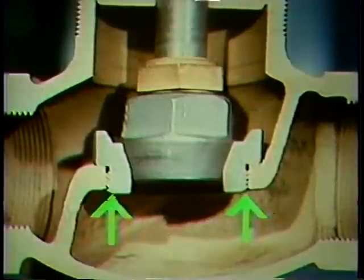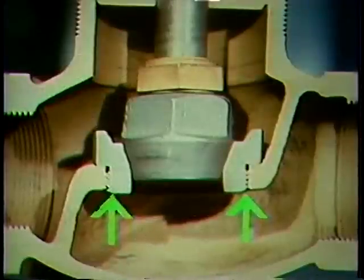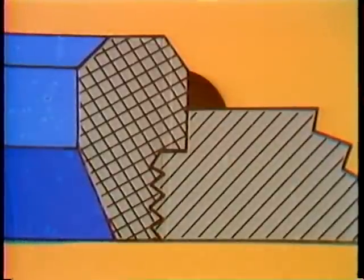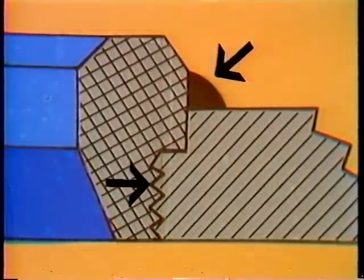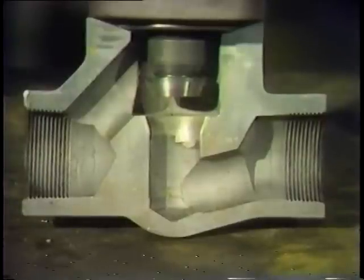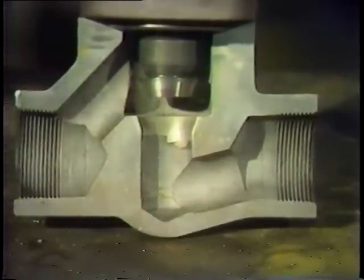Here is a threaded seat and a welded seat. Obviously, the threaded seat is easier to replace should damage occur to the seating area of the valve. Sometimes a combination of these is used — the seat is threaded in and then welded. On some valves, the seat is cast as part of the valve body.